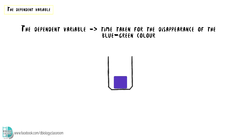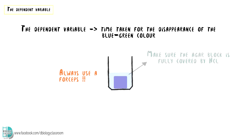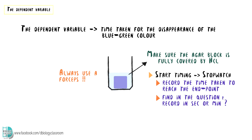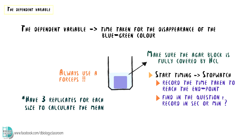The dependent variable is the time taken for the disappearance of the blue-green color. Put an agar block in a beaker by using a forceps. Put the acid into this beaker to cover the block and start timing by using a stopwatch. Observe the block and record the time taken to reach the end point. In the exam, the question usually specifies whether you should record the time in minutes or seconds. For each size, have at least 3 replicates so that you can calculate the average. This is to improve the reliability of your results.